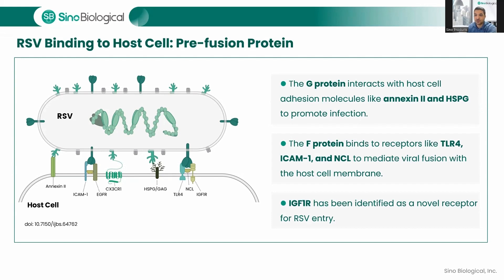RSV entry involves endocytic mechanisms, including activation of ATP1A1 and EGFR, leading to actin rearrangement and macropinocytosis. In addition, insulin-like growth factor 1 receptor (IGF-1R) has been identified as a novel receptor for RSV entry. These interactions and signaling cascades enable RSV to infect host cells efficiently.